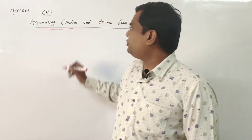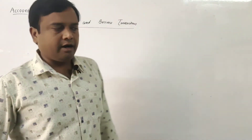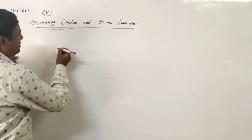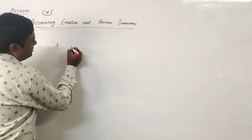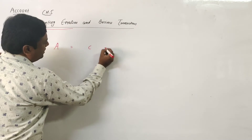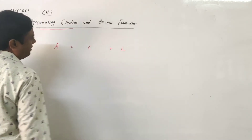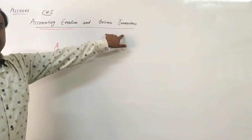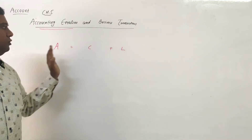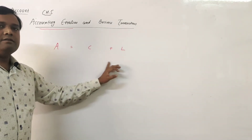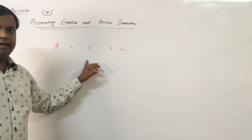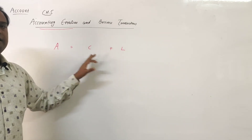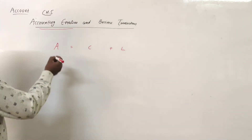First, accounting equation. Here is what the accounting equation is. The formula is A equals C plus L. If there is any business transaction, this equation remains the same. You can see both sides — left side and right side — are equal.